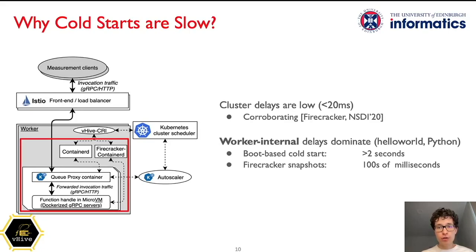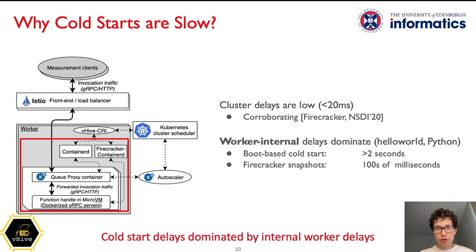Our first experiments with VHive showed that with current technologies, the dominant fraction of cold start delays is attributable to the local worker infrastructure. To give you an intuition: for a simple hello world function, the cluster delays are lower than 20 milliseconds, while the internal worker delays account for hundreds of milliseconds to several seconds. The same behavior is described in the NSDI'20 paper by the Firecracker team. Hence, we had to dig deeper into the root cause of these delays on a single worker.